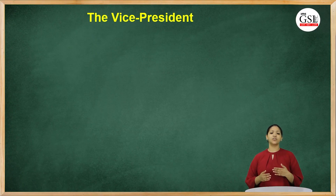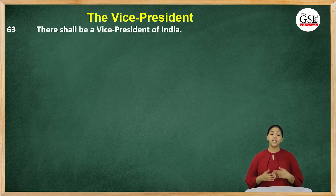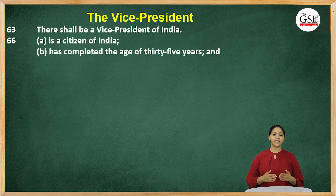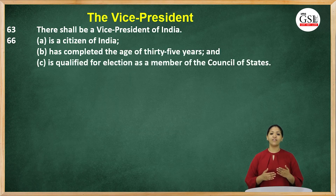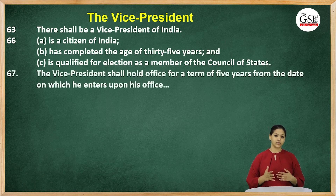The vice president is a part of the executive and is indirectly elected. His manner of election is similar to that of the president; however, his electoral college does not include the members of the state legislature. The qualifications of the vice president are identical to that of the president, except that the president should be qualified to be a member of the Lok Sabha, while the vice president should be qualified to be a member of the Rajya Sabha. The term of office of the vice president is five years.